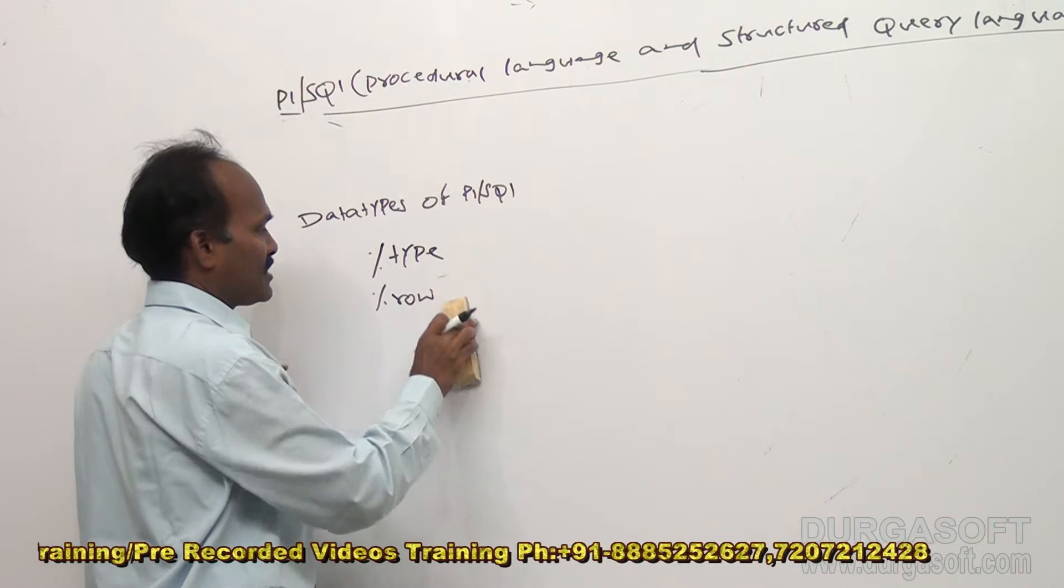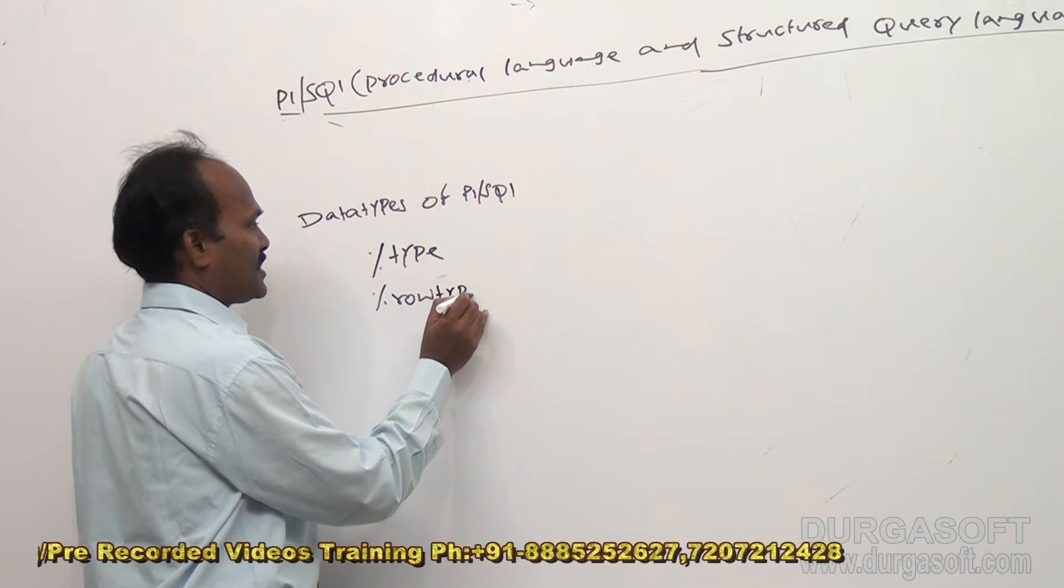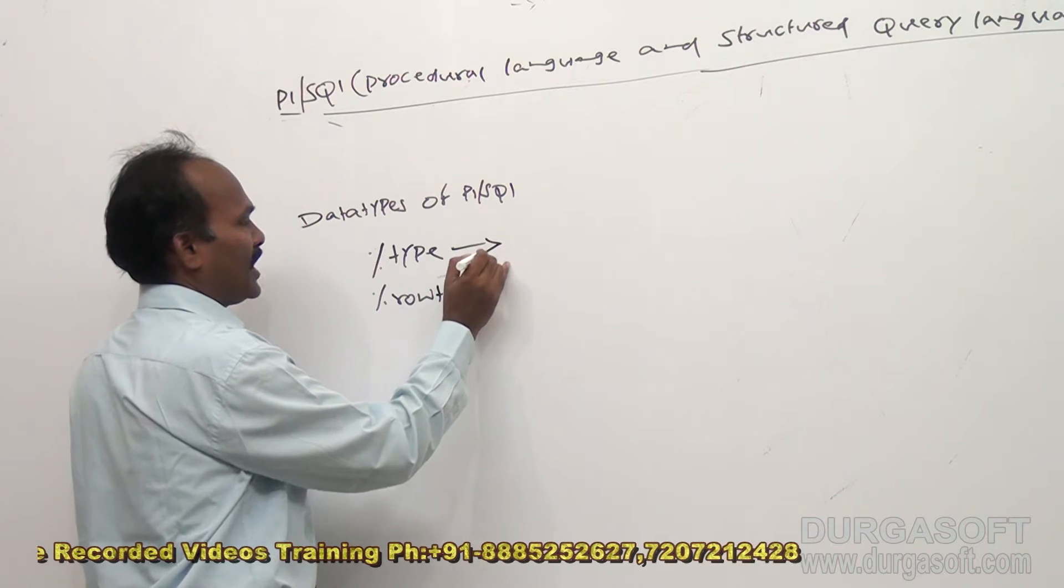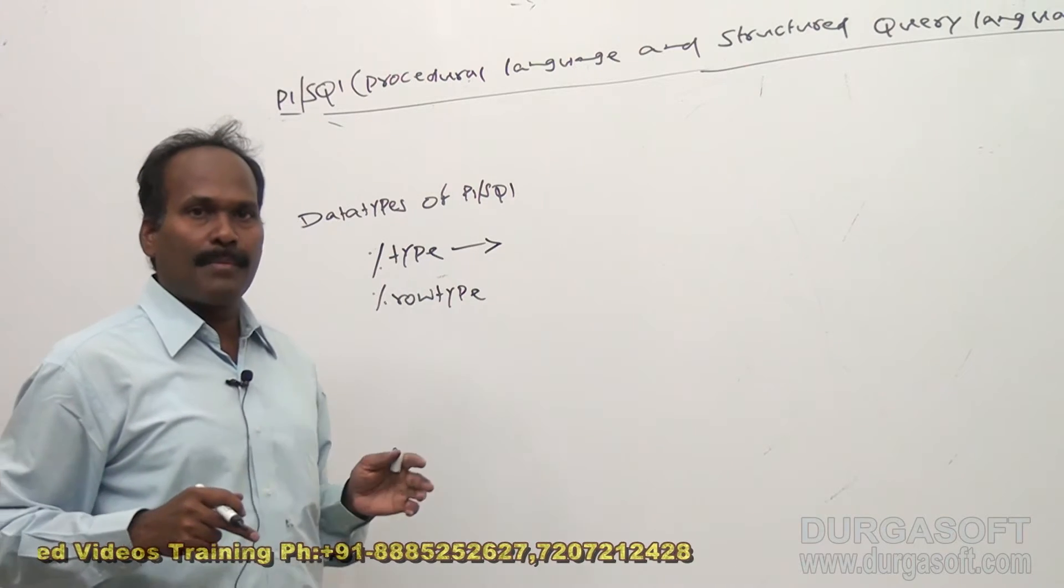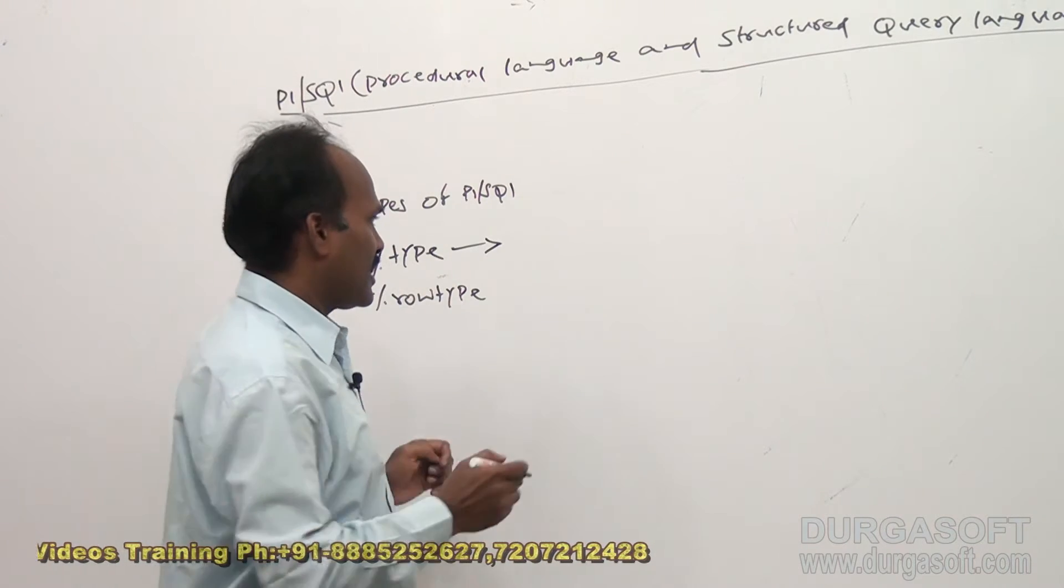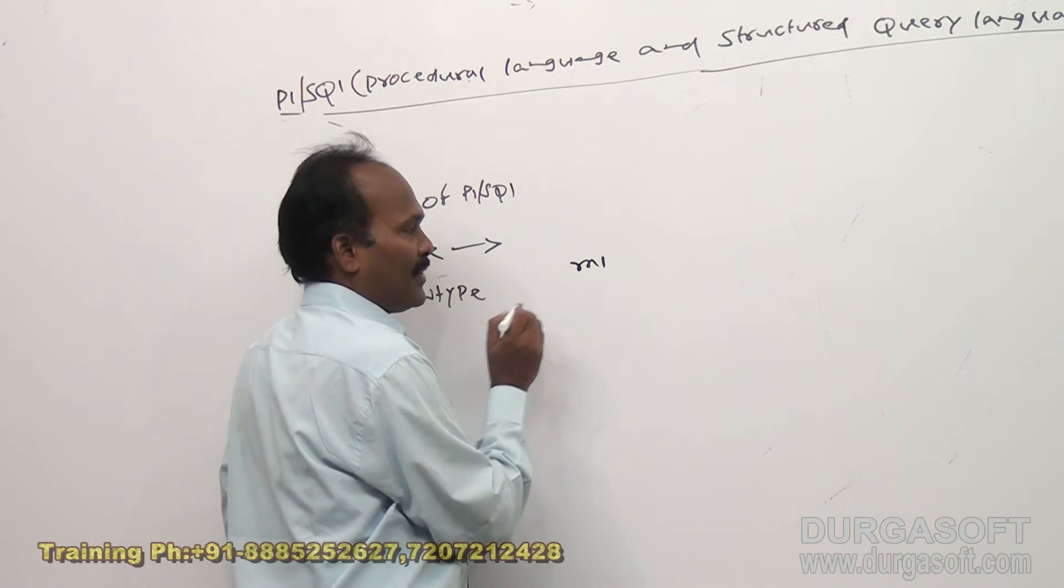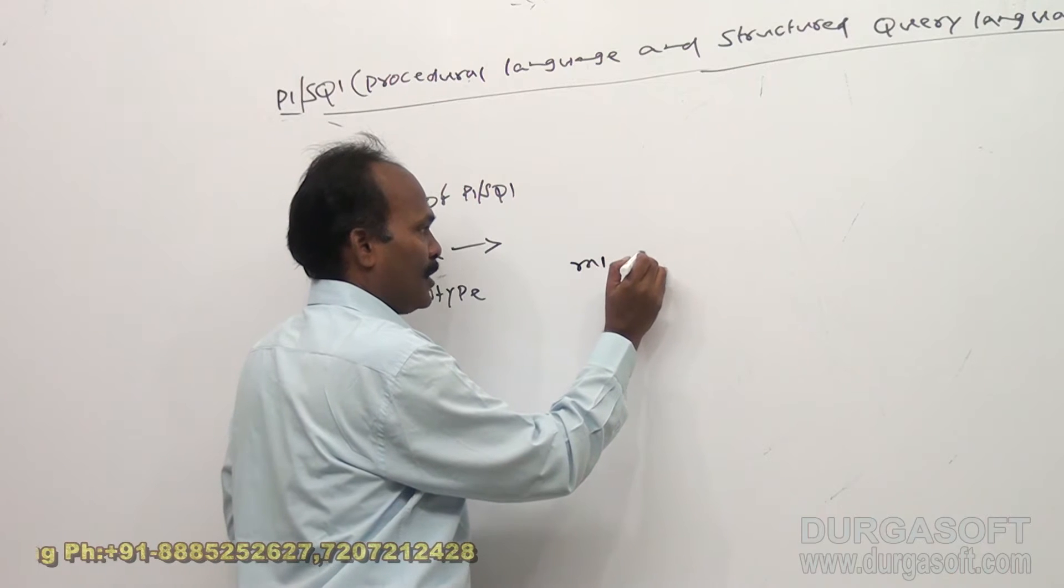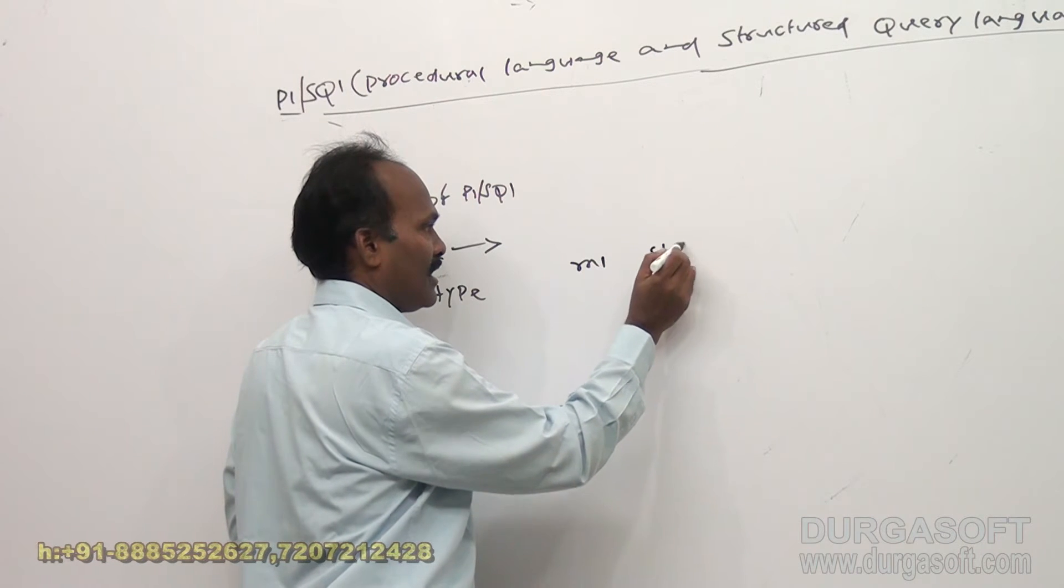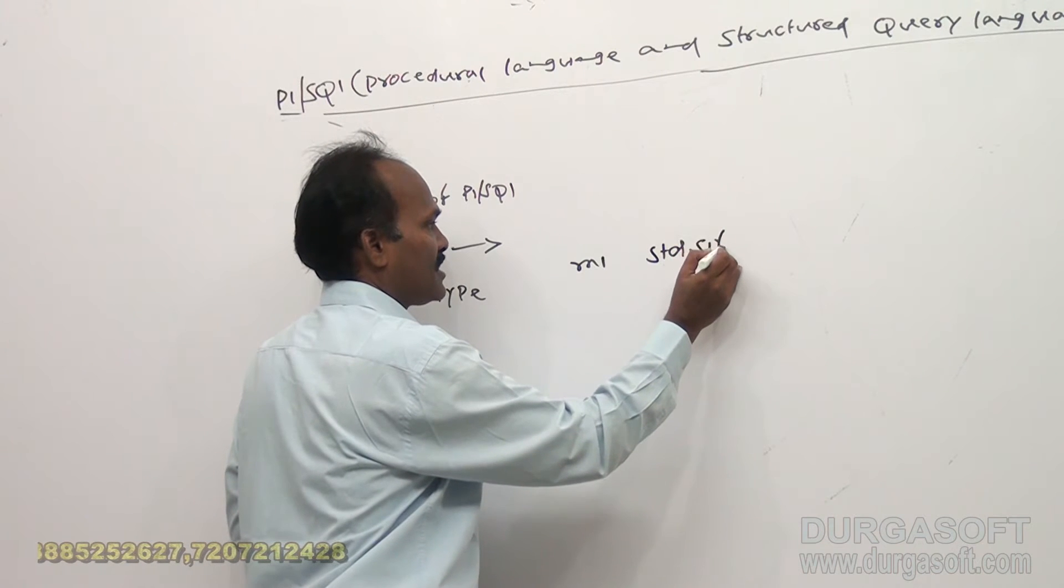So why for this I will explain row type, percentage row type. Percentage type is going to declare a variable which is same as the column type which is available in a table. Suppose I may say like this: m1. For m1, I am declaring a variable called m1. So m1 I am going to declare like this: std dot s1 percentage type.